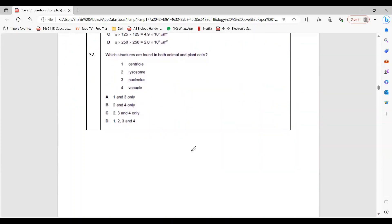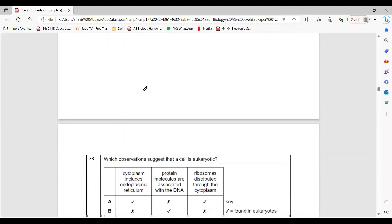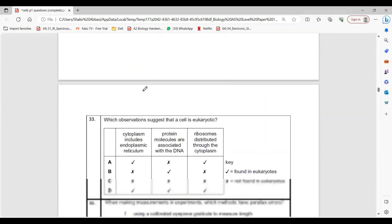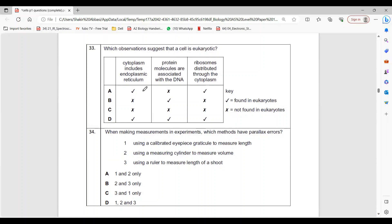Question 32: Both animal and plants. Centriole is found only in animals. Otherwise lysosome, nucleus, and vacuole - small short-lived vacuoles are found in animals, but one big permanent vacuole is found in plants. The answer is C. Question 33: Eukaryote means cytoplasm includes ER, protein associated with DNA - he's talking about histone proteins - and also ribosomes distributed throughout the cytoplasm. This is obviously delta.